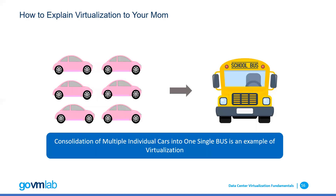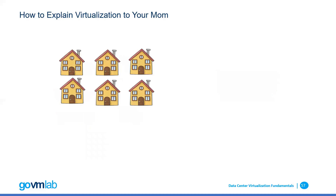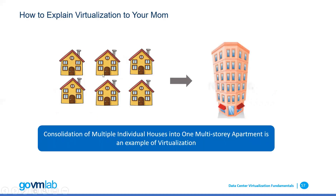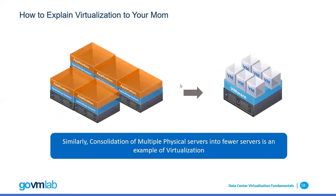So the consolidation of multiple individual cars into a single bus is an example of virtualization. Similarly, consolidation of multiple individual houses into one multi-story apartment is an example of virtualization. Similarly, consolidation of multiple physical servers into fewer servers is an example of server virtualization — where instead of having multiple physical servers, we buy one server with high-end configuration, consolidate all physical servers into fewer servers, and those physical servers get converted into software entities called virtual machines, accommodating six virtual servers on a single hardware.